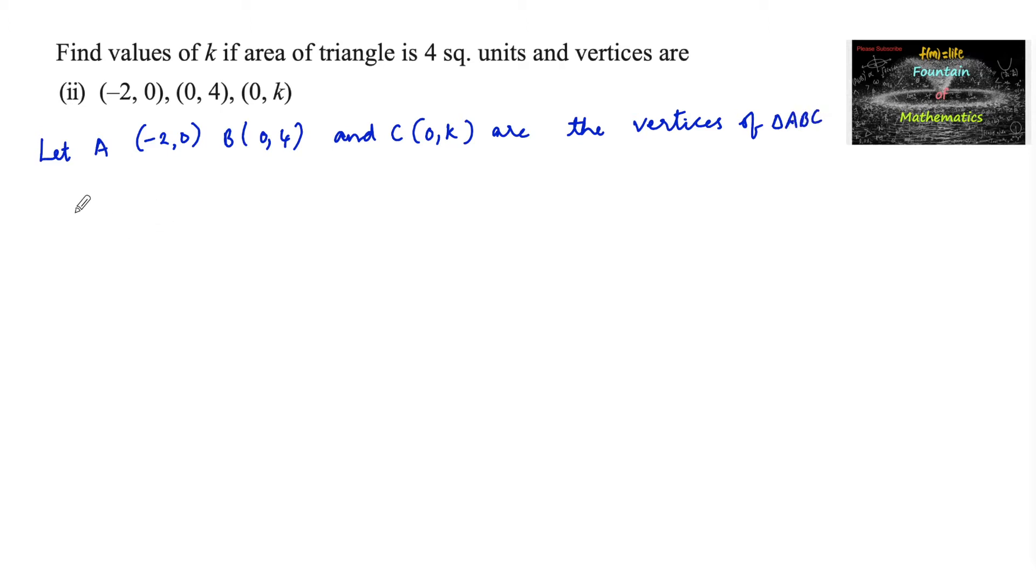It is given that area of triangle ABC is equal to 4 square units. We know that area of triangle with the given vertices can be found using half the absolute value of the determinant: x1, y1, 1; x2, y2, 1; x3, y3, 1.